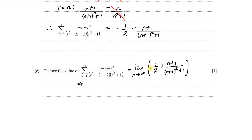The constant minus one-half remains. For the fraction (n+1) over (n+1)² plus 1: as n approaches infinity, the denominator — which is quadratic in n — grows much faster than the numerator, which is linear. Therefore this fraction tends to zero as n approaches infinity. The limit is simply minus one-half, which is the answer to part C.